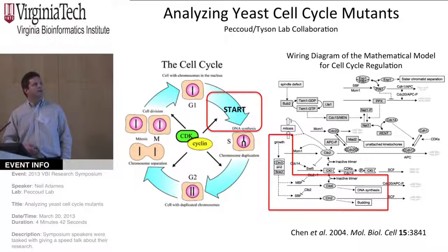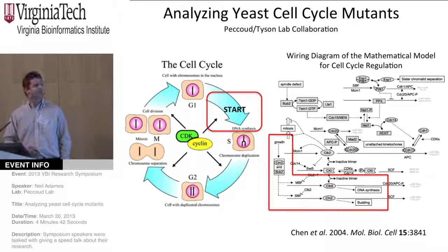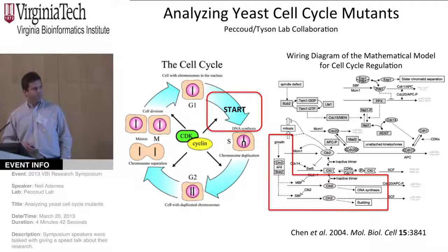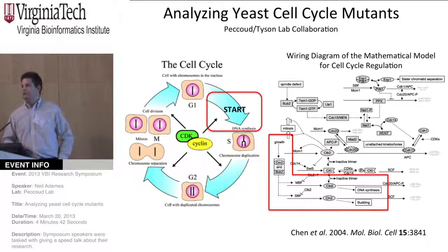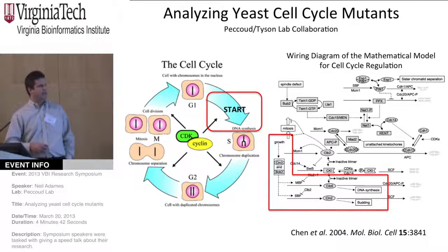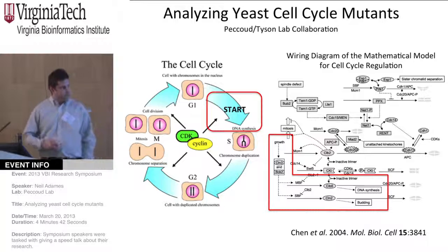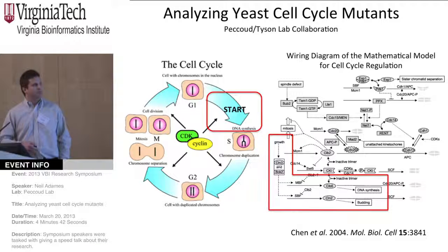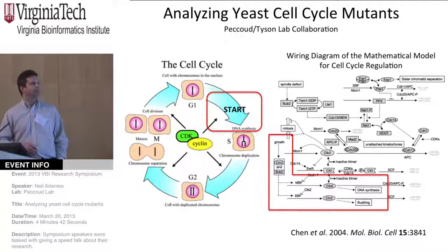The beauty of the cell cycle model is that in budding yeast in particular, there's a huge wealth of information to develop the model. For example, this model was developed in a way that it emulated the phenotypes of over 120 different cell cycle mutations that have been made in budding yeast over the last 40 years. But the problem is that there's not a lot of validation that has been done on biological models, and so that's our role.